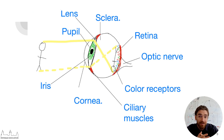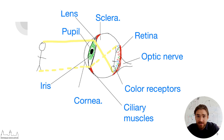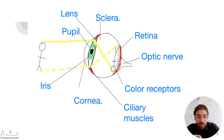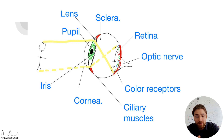Here's a diagram to help visualize what we've discussed. Light first goes through the cornea, then enters the pupil, which is controlled by the iris. After entering the pupil, it is refracted by the lens, which is controlled by the ciliary muscles. The lens focuses light onto a certain point on the retina, where the color cone cells are stimulated and send impulses through the optic nerve to the brain.